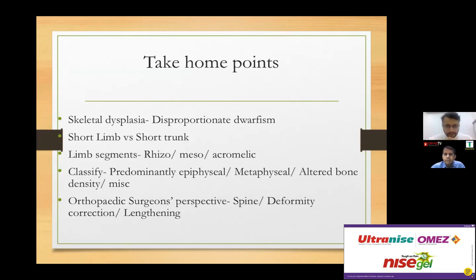Regarding metaphyseal dysplasias with multiple deformities — do all deformities need correction or only symptomatic ones? Typically deformities corrected are those around the knee and tibia. Coxa vara, especially in multiple epiphyseal dysplasia with significant abductor lurch, also needs correction. Upper limb deformities are usually not corrected because they require general anaesthesia, which is more challenging in these patients. Lower limb deformities around the knee and hip are the most commonly corrected.